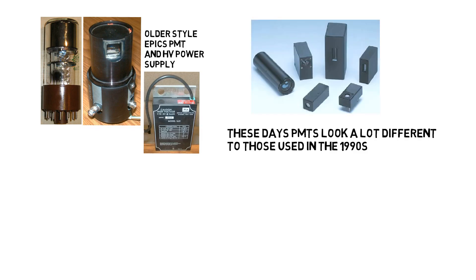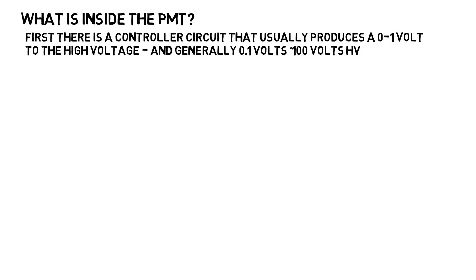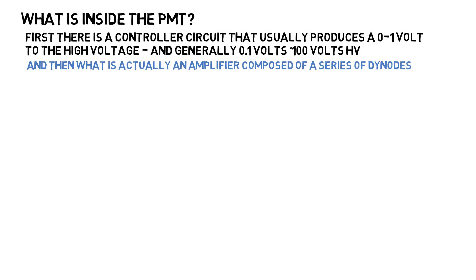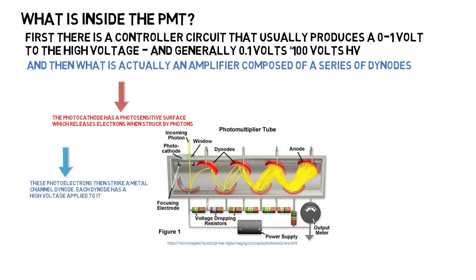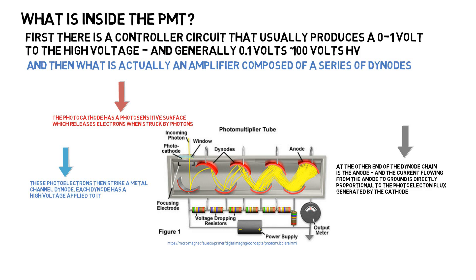These days, PMTs look a lot different to those used in the 1990s. Inside a PMT, there's a controller circuit that usually produces between 0 and 1 volt, which drives the high voltage — generally, 0.1 volt from the controller circuit equals 100 volts of high voltage. There is an amplifier composed of a series of dinodes. The photocathode has a photosensitive surface which releases electrons when struck by photons. These photoelectrons then strike a metal channel dinode, each of which has a high voltage applied to it. The current flowing from the anode to ground is directly proportional to the photoelectron flux generated by the cathode. The best efficiency of a PMT is about 30%.